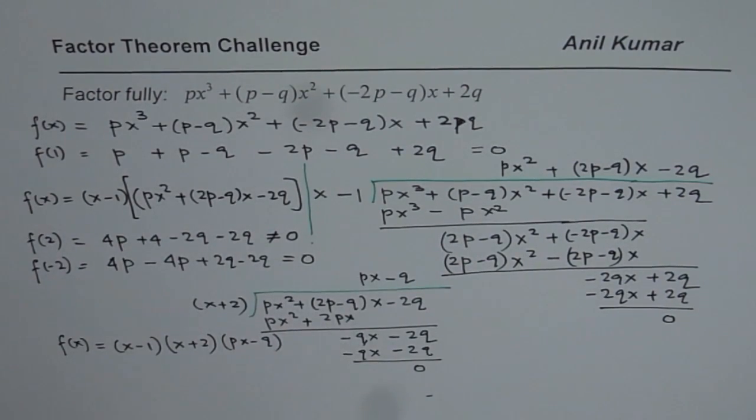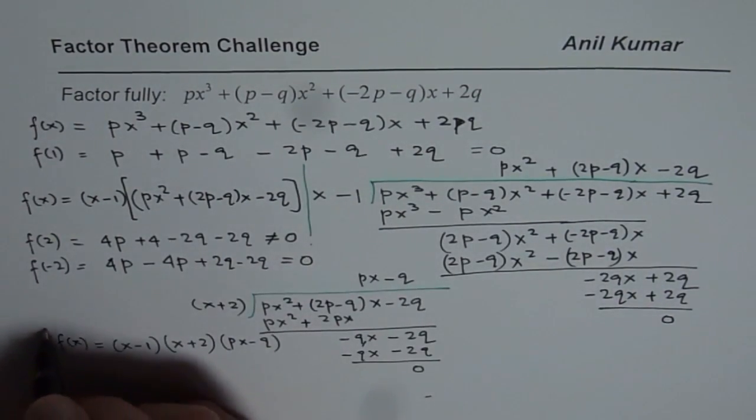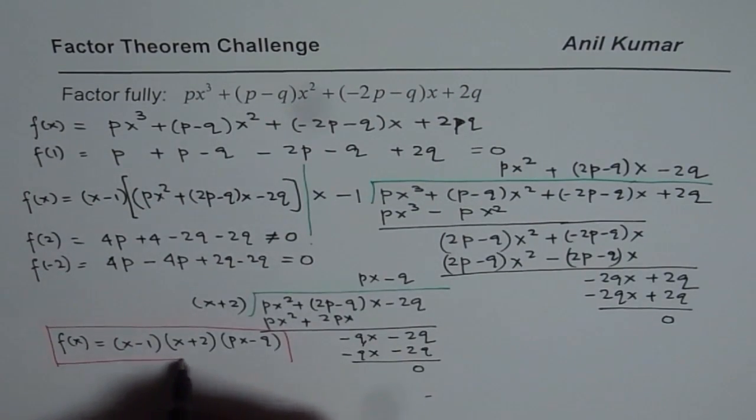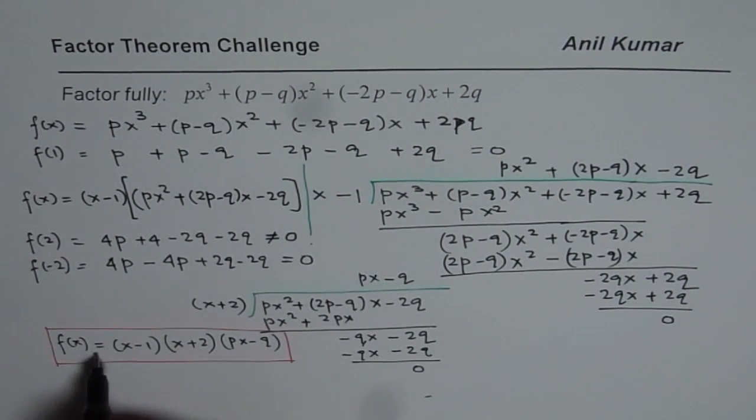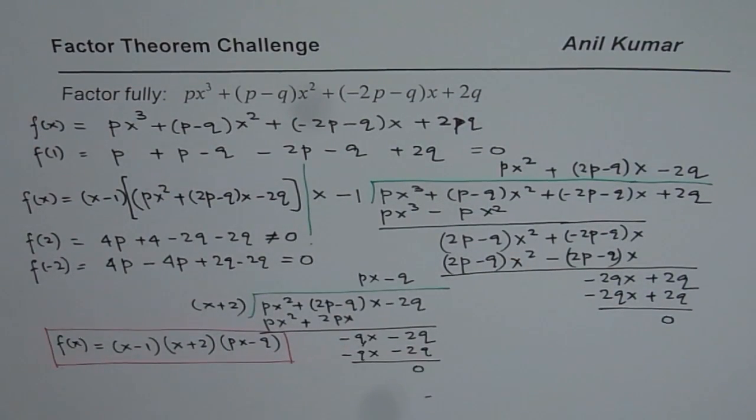So we can now further factor this polynomial, and write our result as f(x) = (x-1)(x+2)(px-q). So that is how we can fully factor the given expression.